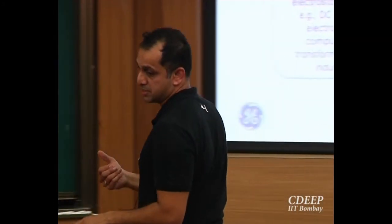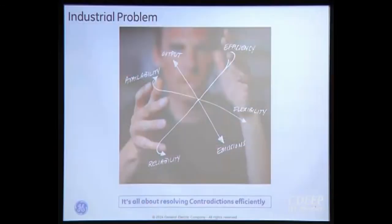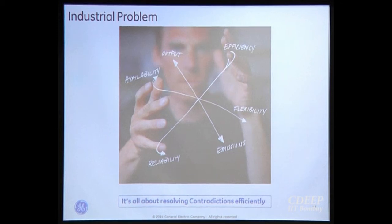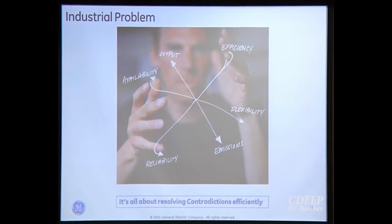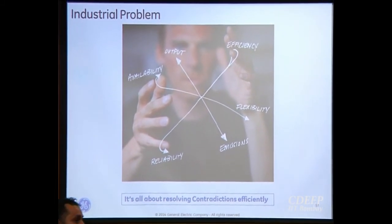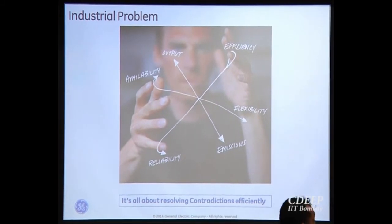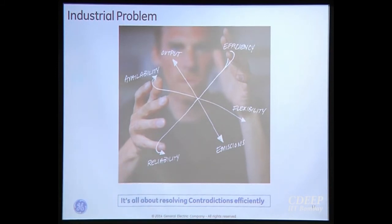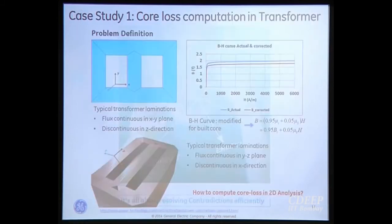There are always trade-offs. If you want high reliability you have to sacrifice flexibility; if you want more output you have to accept more emissions. These kinds of trade-offs we need to handle in all problems. As Dr. Pramanik said, it is all multi-physics — you cannot survive without mechanical or other fields. It is always other fields that constrain you; if you are good in electromagnetics, something mechanical or thermal will limit you.